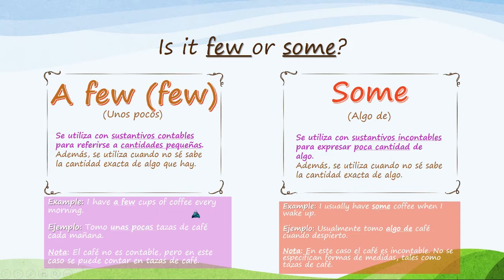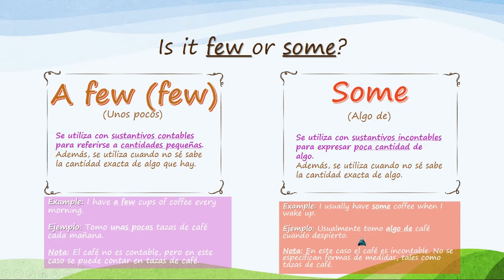Some is used with uncountable nouns — water, sand, sugar, coffee. For example: I usually have some coffee when I wake up — usualmente tomo algo de café cuando despierto. In this case, the person cannot count the cups of coffee — it may be one cup or less than one cup, perhaps leaving some liquid in the cup. That is why they say some coffee, unlike the person who uses a few, who remembers drinking more than two complete cups in the morning.